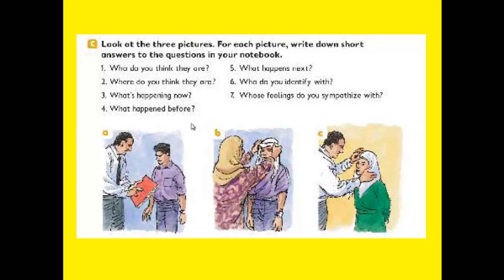Now let's do Practice C. Look at the three pictures — picture A, picture B, and picture C. For each picture, write short answers to the following questions in your notebook: Who do you think they are? Where do you think they are? What is happening now? What happened before? What happens next? Who do you identify with? And whose feelings do you sympathize with?